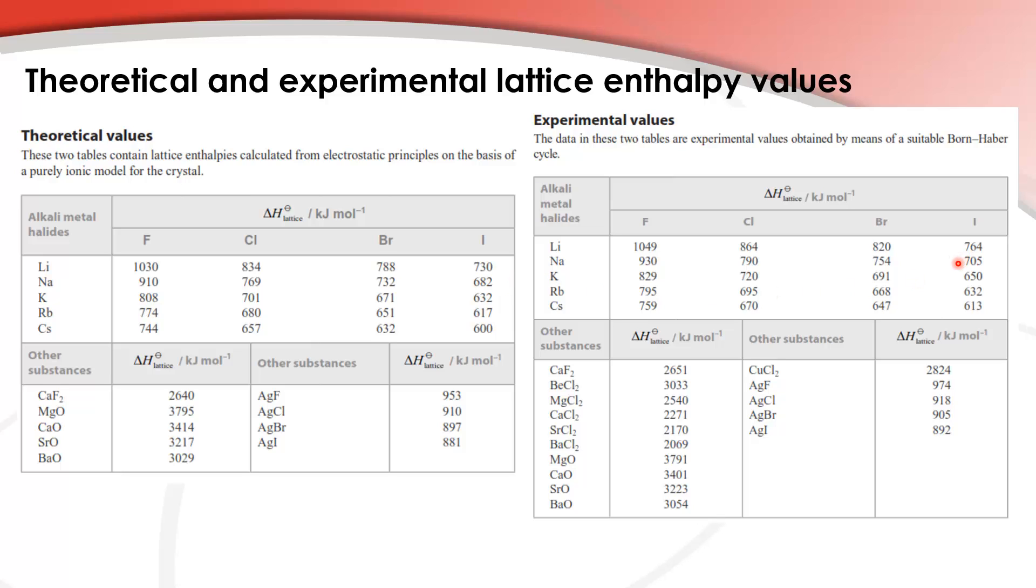The reason for this additional strength is that the theoretical values are based on the ionic model, which assumes the only bonding between ions is ionic. However, in reality, there is also additional covalent character between the ions, which adds additional strength to the bond.